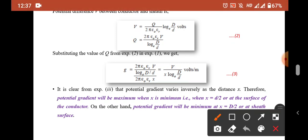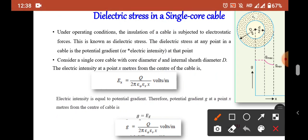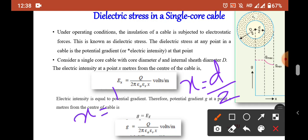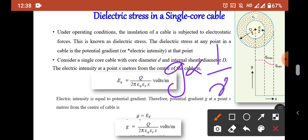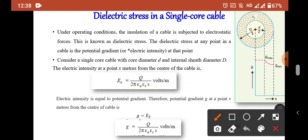From this equation we can understand that G is inversely proportional to x, where x is the distance from the center of the cable. So the potential gradient is inversely proportional to x. At the surface of the conductor, x = d/2, and at the internal sheath surface, x = D/2. Since G is inversely proportional to x, as x increases G decreases — x is minimum at the conductor surface and maximum at the internal sheath surface. We can now plot a graph of G versus x.